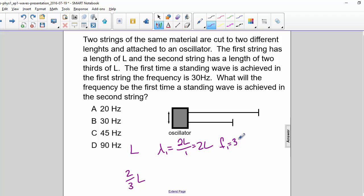The frequency is 30 Hz, so the wave speed is equal to lambda times F: 2L times 30, so 60L.